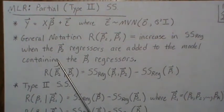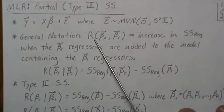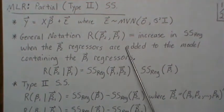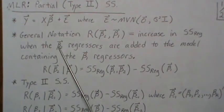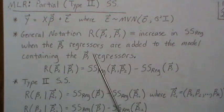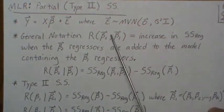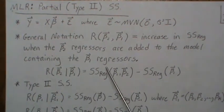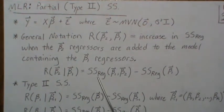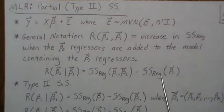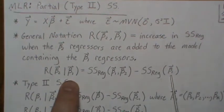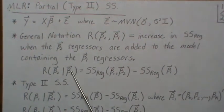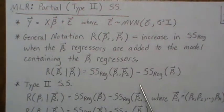The general notation is R of beta 2 given beta 1, and remember these are vectors. This represents the increase in the sum of squares regression when all these beta coefficients are added to the model containing all the other beta coefficients. This is the general notation we talked about in the previous video, PV28. It's the sum of squares regression with all the beta parameters in, minus the sum of squares regression with just the first set of beta parameters.